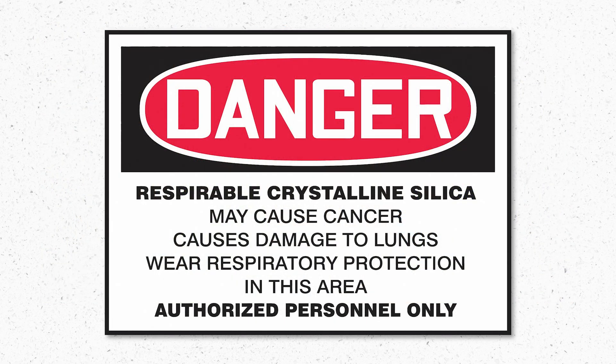Exposure monitoring results are also used to determine which areas in the facility will be designated as regulated areas. Before entering these areas, there should be signs to alert employees about the exposure hazards and prompt them to wear appropriate respiratory protection. The sign must state: DANGER – Respirable Crystalline Silica – May Cause Cancer – Causes Damage to the Lungs – Wear Respiratory Protection in This Area – Authorized Personnel Only.